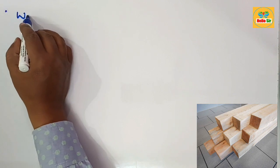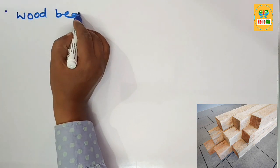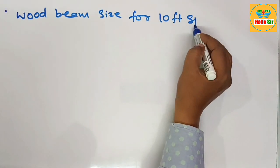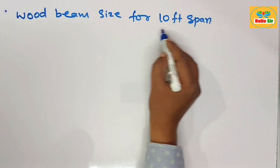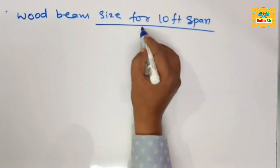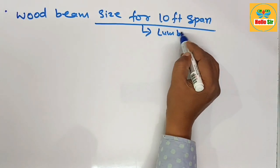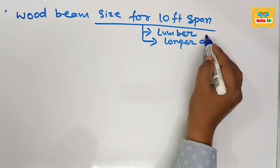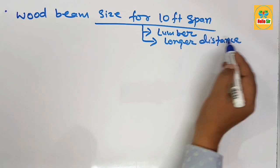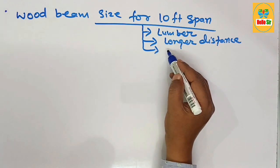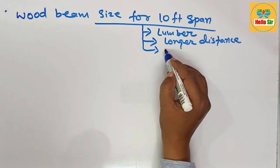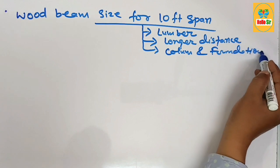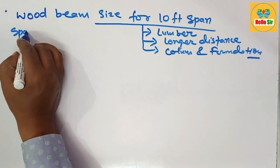In this video, we find the wood beam size for a 10-foot span. A wood beam is a composite piece of lumber required to span longer distances, and it can support live load, dead load, and seismic load, transferring their weight down to columns and finally to the foundation.